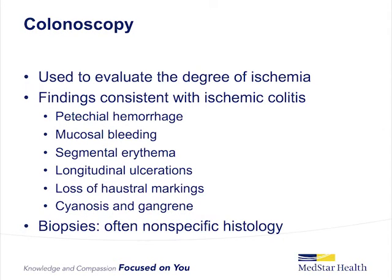Colonoscopy is the diagnostic test of choice to evaluate the degree of ischemia in patients without peritoneal signs. It is the most sensitive and specific test for the diagnosis of ischemic colitis because it detects mucosal changes via direct visualization. Findings consistent with ischemic colitis include petechial hemorrhage, edematous and fragile mucosa, mucosal bleeding, segmental erythema, scattered erosions, and longitudinal ulcerations. Findings suggestive of more severe ischemia include loss of haustral markings, cyanosis, and gangrene. Biopsies can be useful to rule out other diseases, but findings associated with ischemic colitis are often nonspecific.